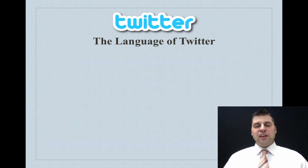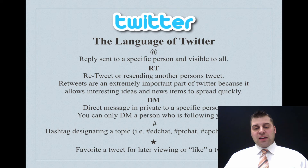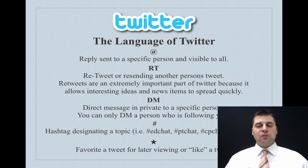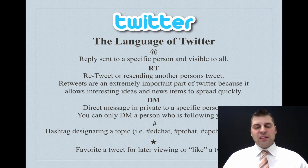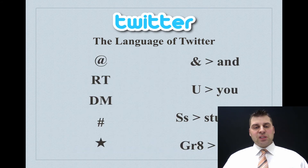We'll go more into hashtags in a later section. Just to recap, these are the symbols of Twitter: the at symbol, the retweet, the DM, and the hashtag. The last symbol we're going to share today is the favorite button — the star. You're going to find more resources than you know what to do with on Twitter. The favorite button, found below someone's tweet, lets you save it for later. You can also use it as a like button, similar to Facebook — hit that star to let someone know you agree with or appreciate what they shared.